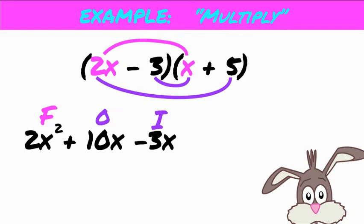And last, we grab the last one in each binomial, which are those two in black, and we multiply those last terms. We have a negative times a positive, which is a negative, and we're almost done.